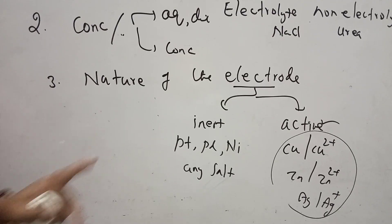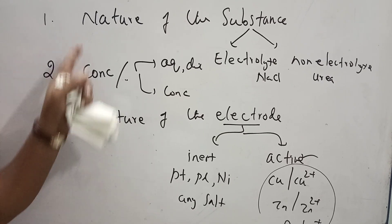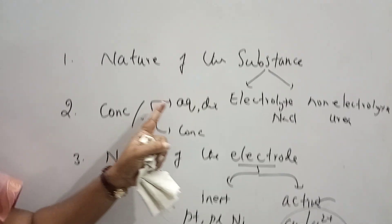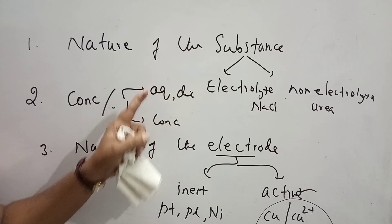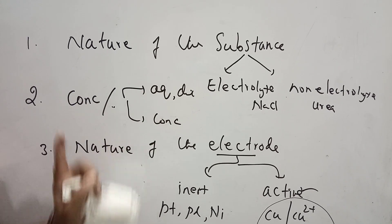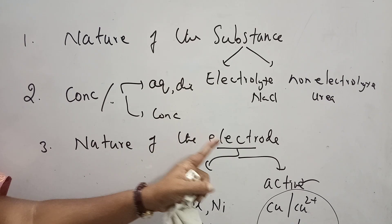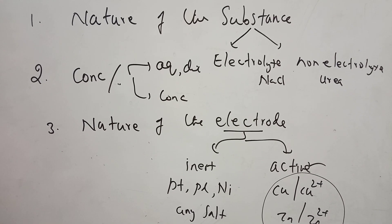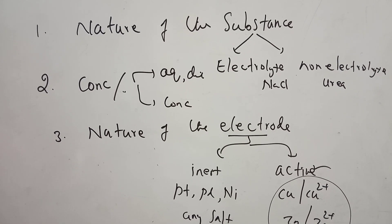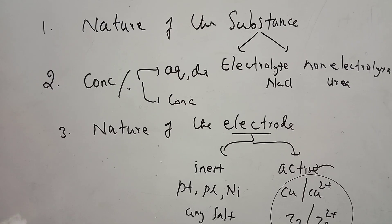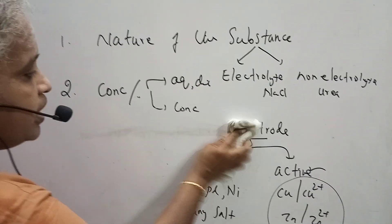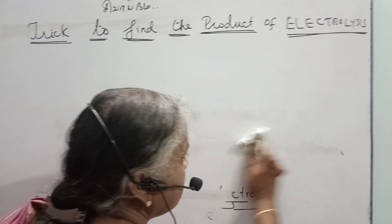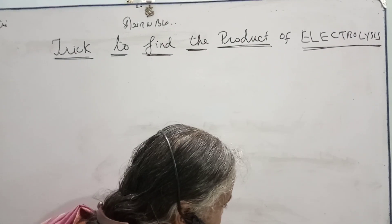So with that, I am pointing out three things. The product depends upon the nature of the substance, whether the solution or electrode is dilute or concentrated, and the third point is based on the nature of the electrode. Now let us see how the products are going to be obtained based on these conditions — each heading we are going to discuss.